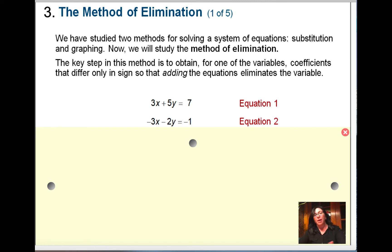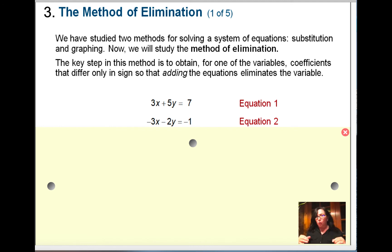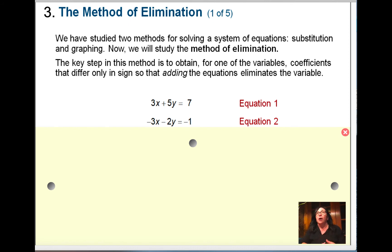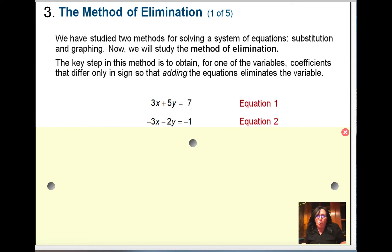The next question uses the elimination method. For this method, your job is to work it so that when you either add the equations together or subtract them, the x or the y is going to be eliminated — it's going to cancel. Sometimes you have to multiply one of the equations by a number in order to eliminate the x or the y. So we've got the graphing method done, the substitution method done, and now we're going to talk about elimination.